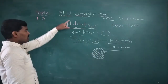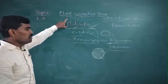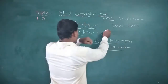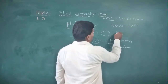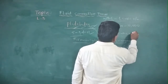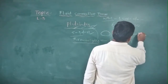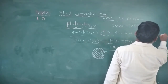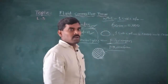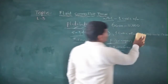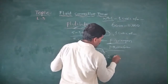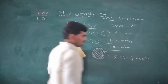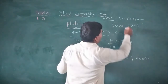The platelets are the third type of blood cells after RBCs and WBCs. In one cubic millimeter of blood, the number of platelets is 2,50,000 to 4,50,000.